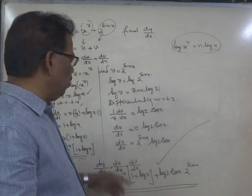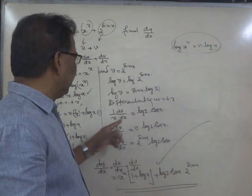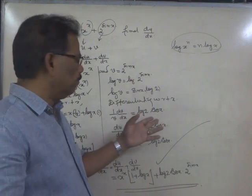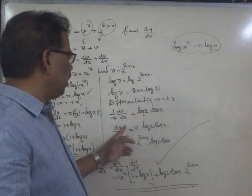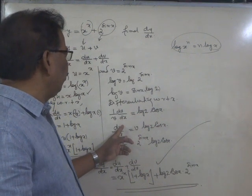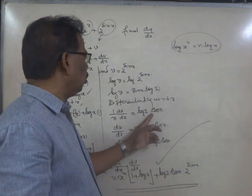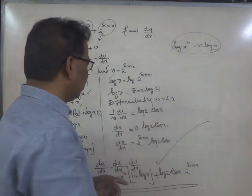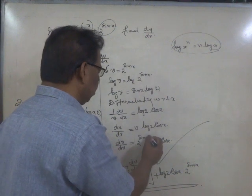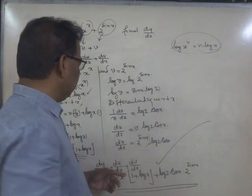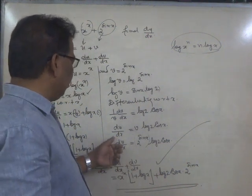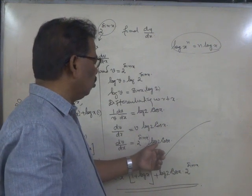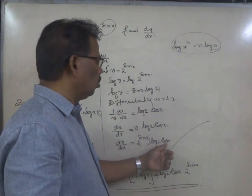Now, for obtaining dv by dx, just multiply by v. So dv by dx equals v into log 2 into cos x. We shall replace v by 2 raise to sin x, giving dv by dx equals 2 raise to sin x times log 2 times cos x.